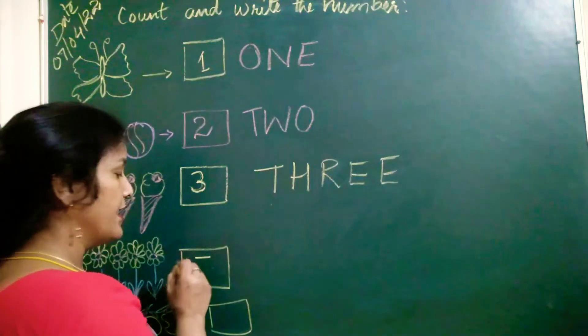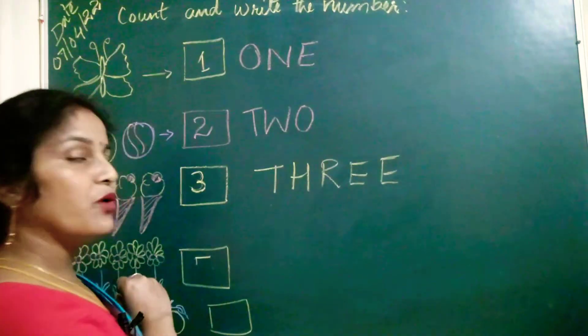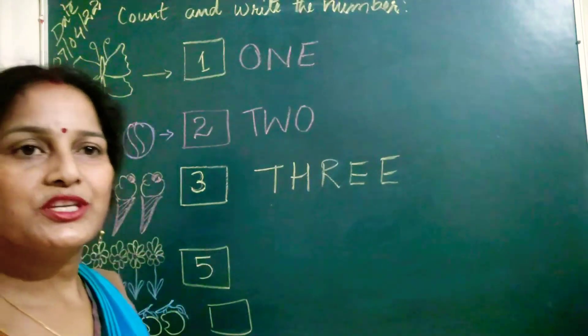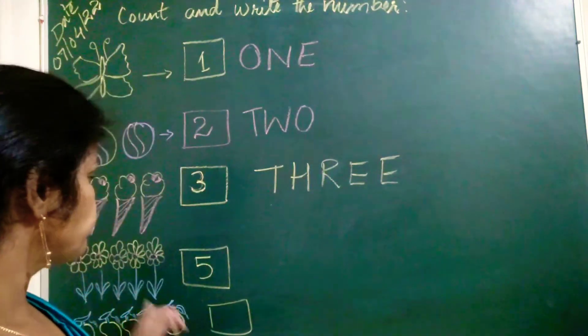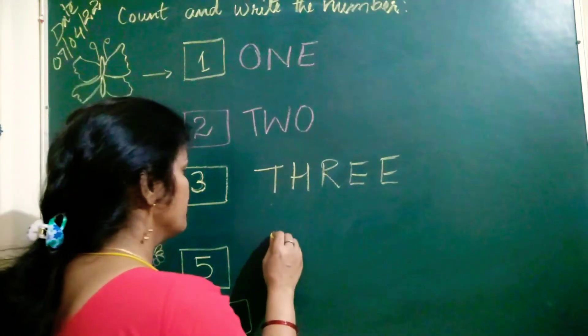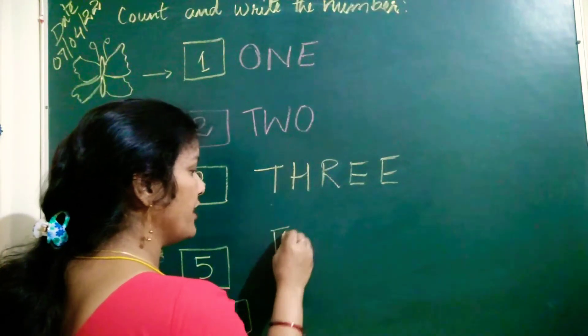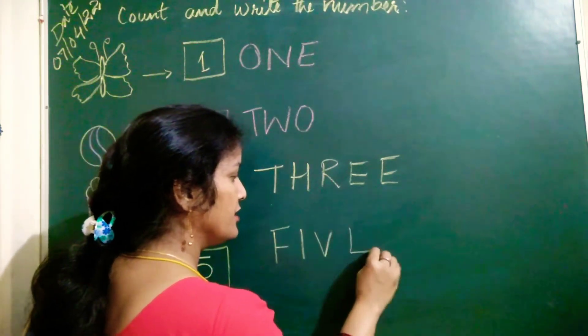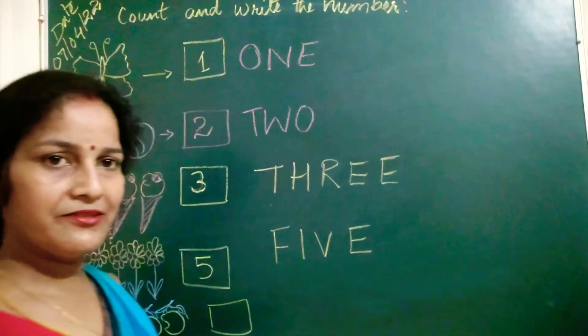So here first line. After just a small one. And curve. So this one is five. So how many flowers are here? Five. So what will be the spelling of five? F. I. V. E. Five. Five.